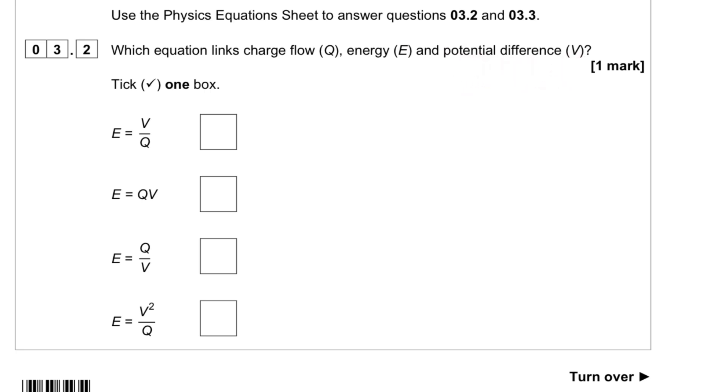We know from the definition of energy equals QV, where Q equals IT. But we're looking for the first one here, which is E equals QV. Q is the charge, which is the electron, and V is the voltage supply. So we're looking for this answer here.